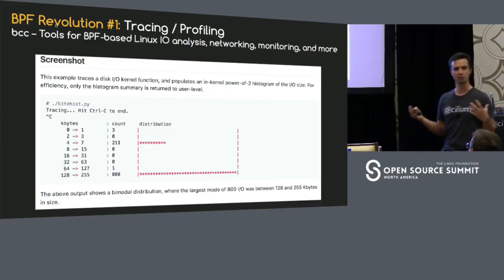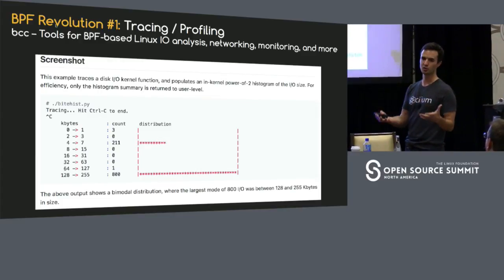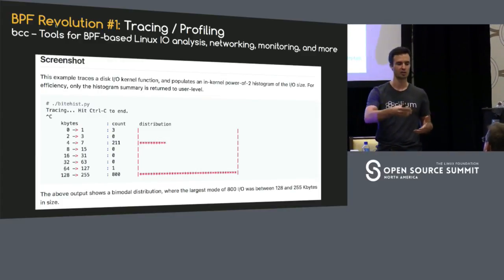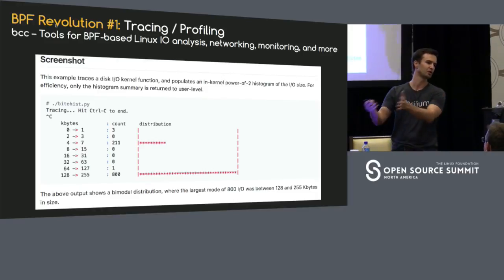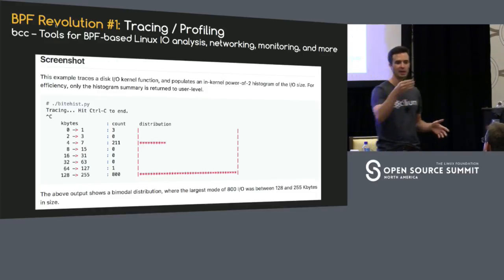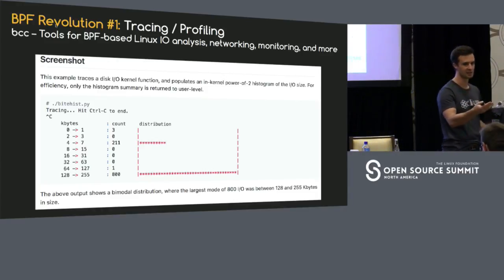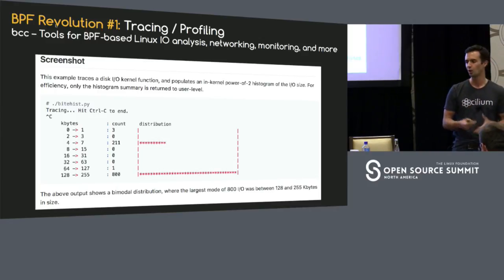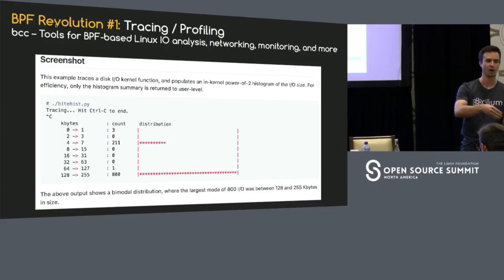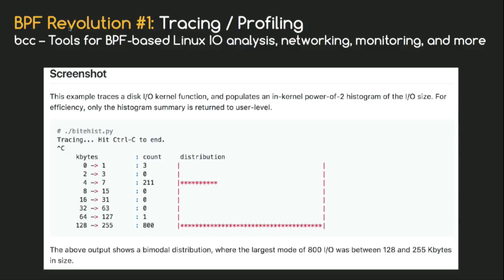One example is showing how we can use BPF to generate histograms directly in the kernel. So instead of sampling everything to user space and then looking at the samples, we can actually do that inside the kernel. Why was this even needed? Because the number of samples were too high to even export them to user space. This is why the tracing and profiling subsystem has moved to BPF.